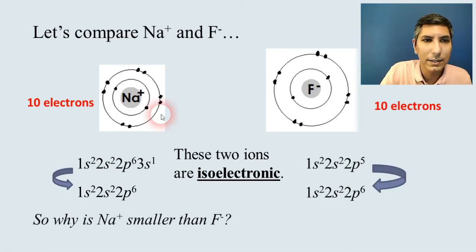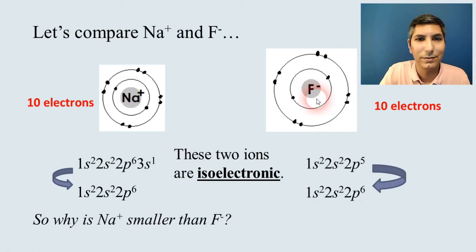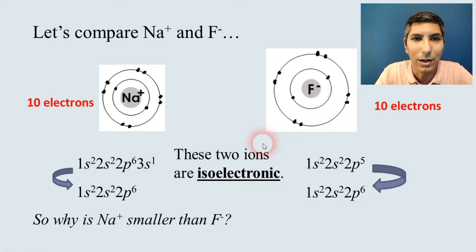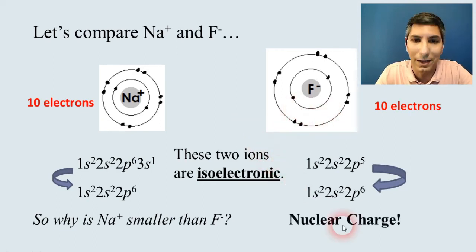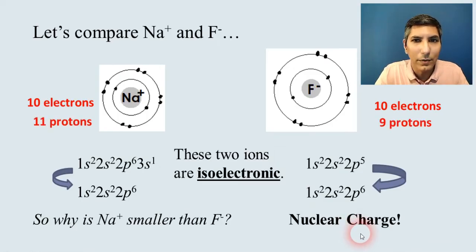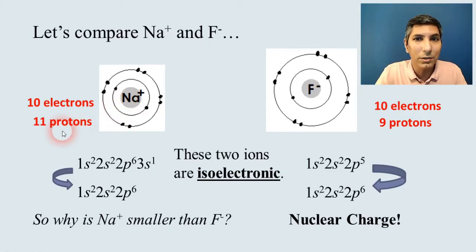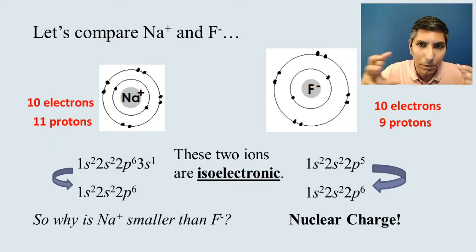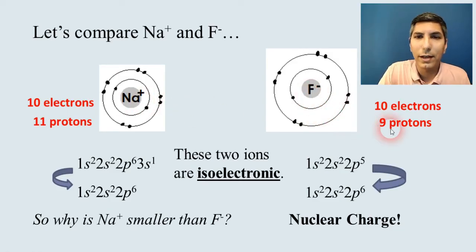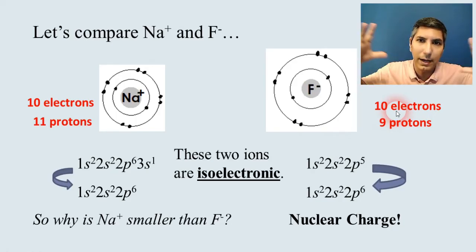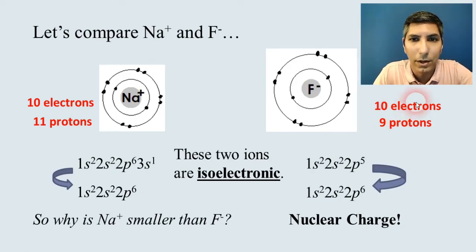If they're isoelectronic, why is the sodium cation so much smaller than the fluoride anion? It comes down to the protons and nuclear charge. The sodium cation has 11 protons, so those protons win the tug of war and pull in the electrons much more tightly. In the fluoride anion, the electrons are winning and spread out farther from the nucleus. That's the nuclear charge difference at work.